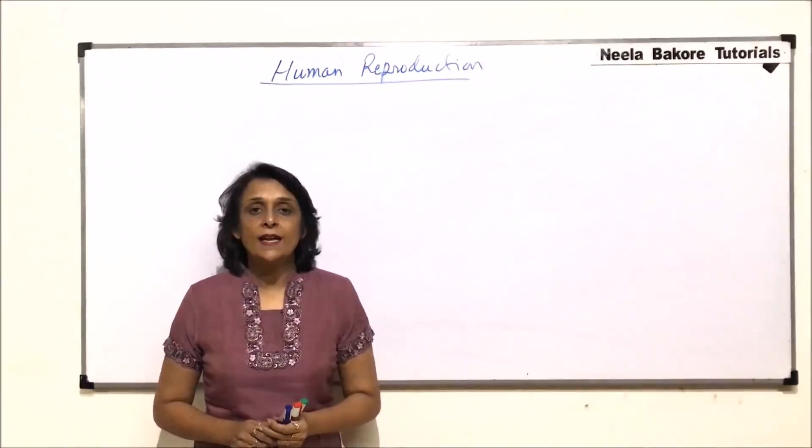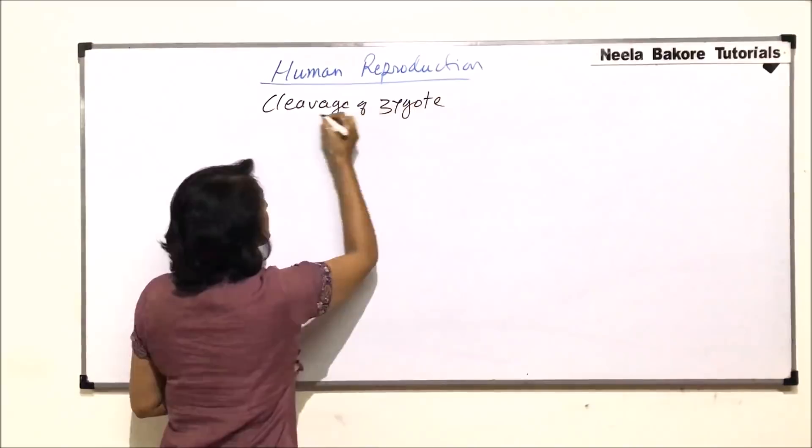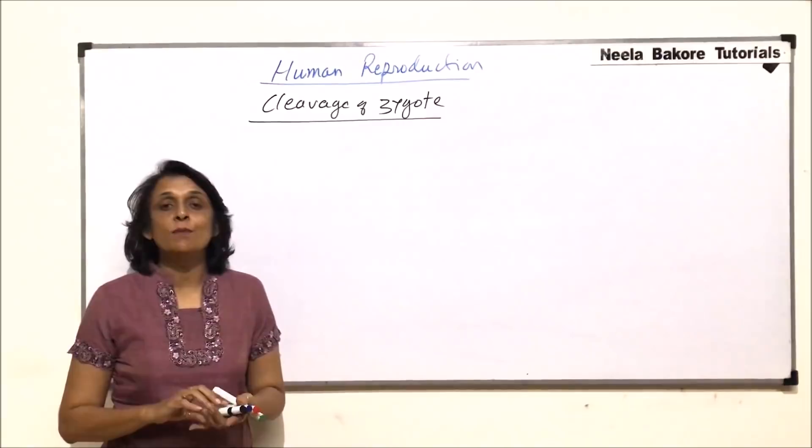In this part, we'll talk about the post-fertilization events. The first is cleavage of the zygote. The diploid zygote, which is formed as a result of fertilization, and we have seen that fertilization gets completed in multiple steps.